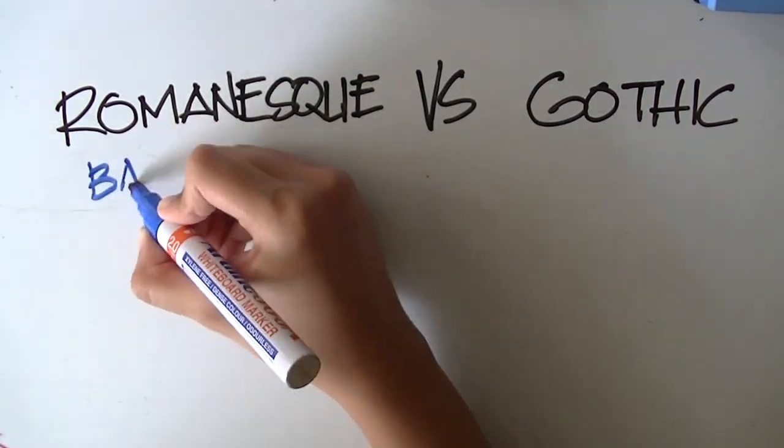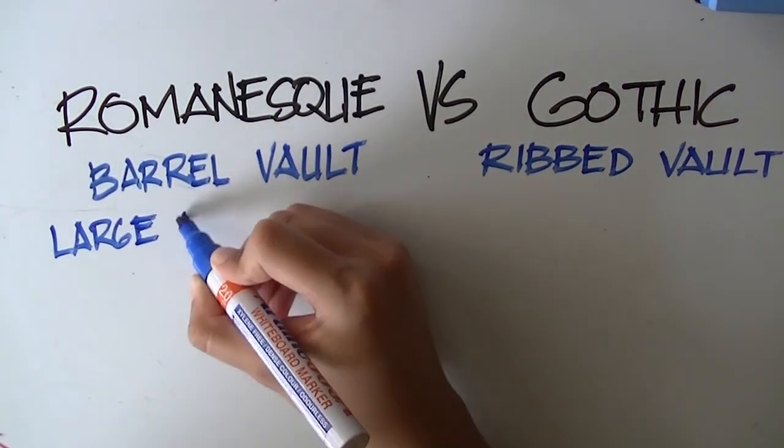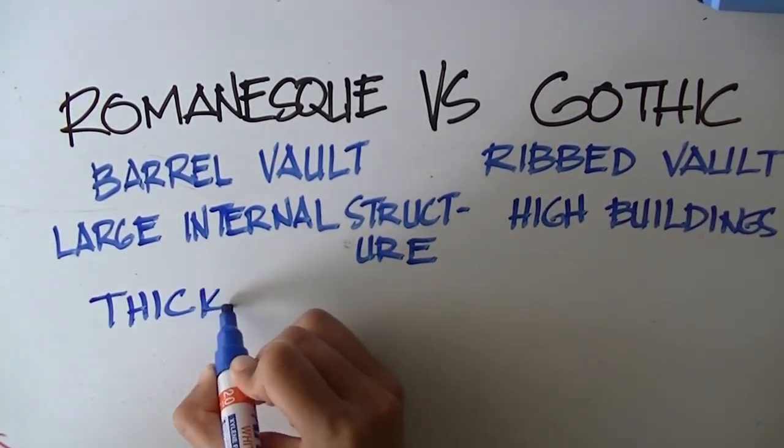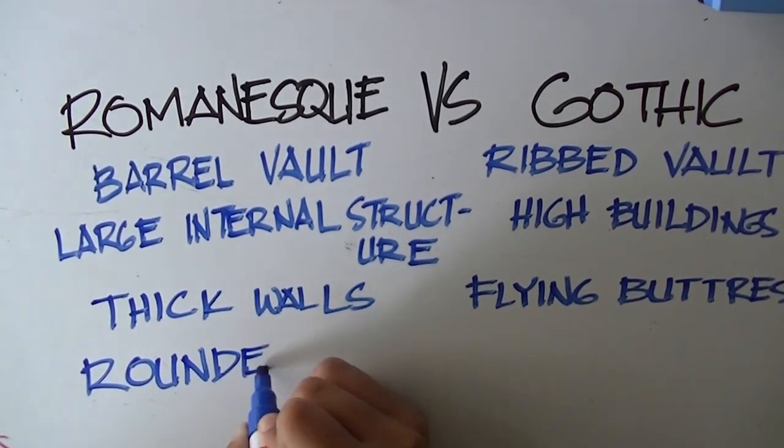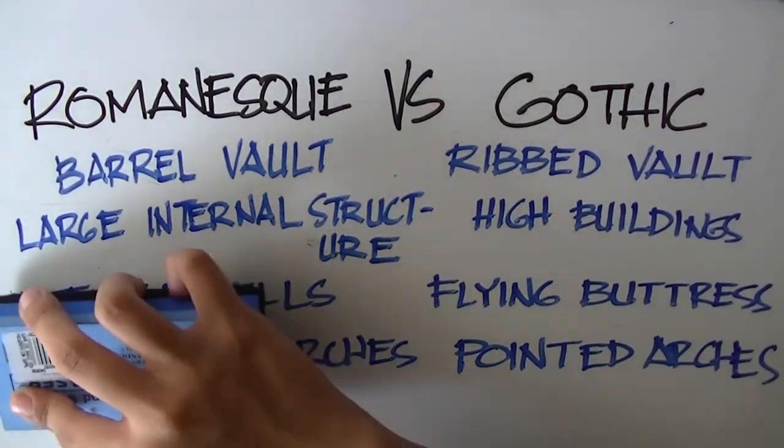In comparison with Romanesque style, Romanesque had barrel vaults while Gothic had ribbed vaults. It focused on large internal structures while Gothic was more into high buildings. Romanesque had thick walls to support the structure while Gothic had flying buttresses. And of course, Romanesque were into round arches as the latter was into pointed ones.